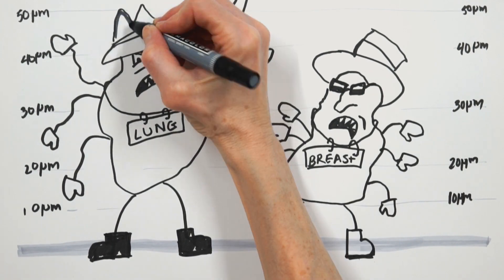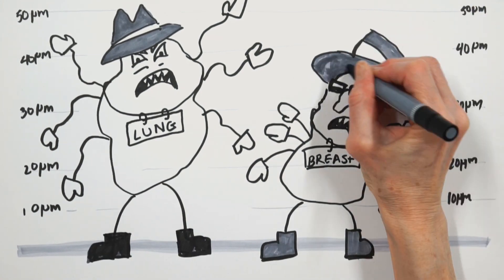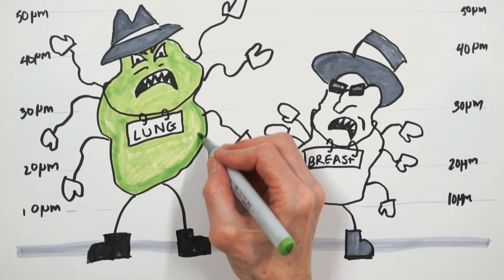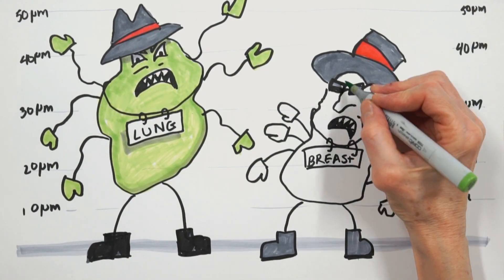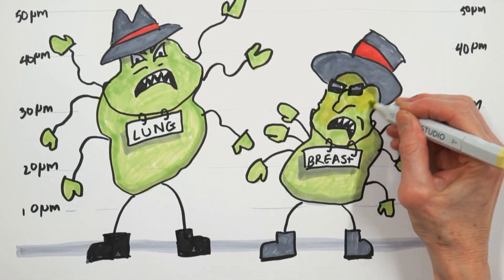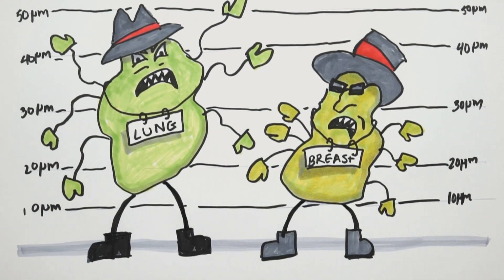So, we perform a test called immunohistochemistry, where we apply antibodies and chemical stains to the sample. Depending on which antibodies or stains stick, we can identify the type of cancer from our lineup.